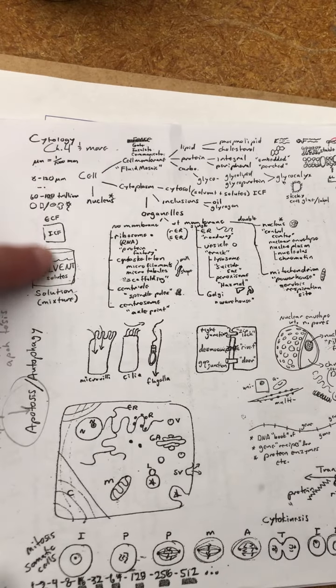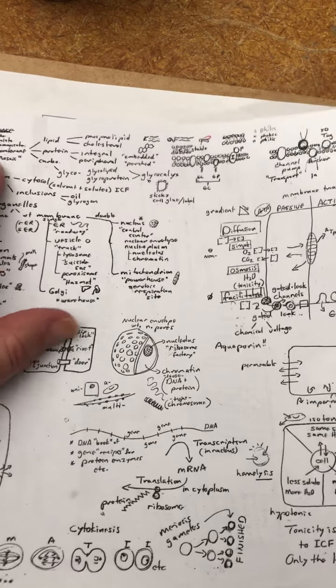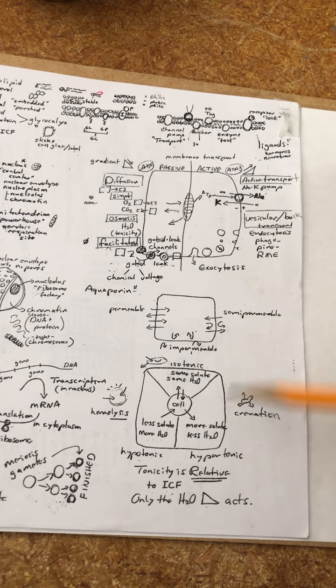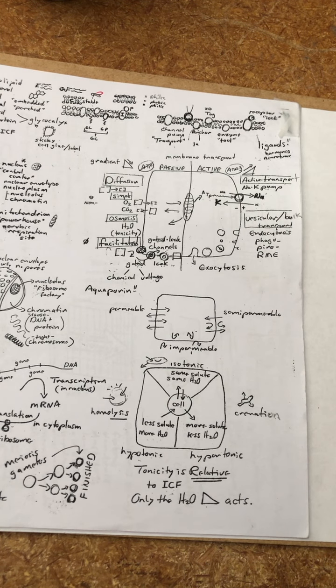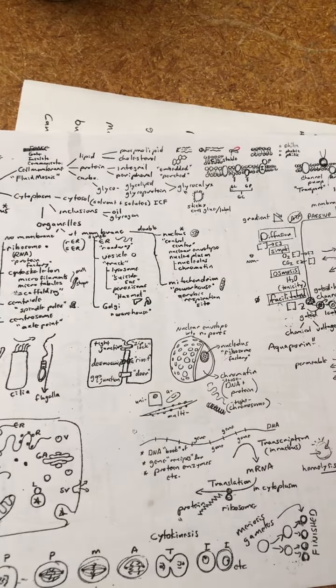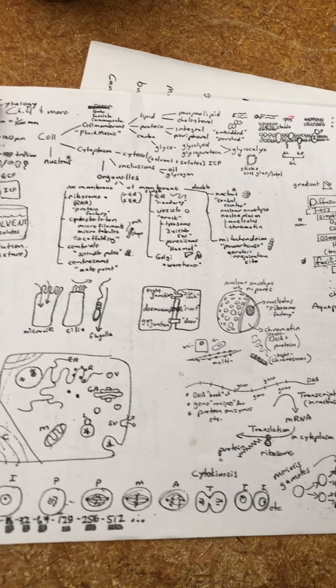Last time we were together, we had looked at the general features of the cell. We had looked at the general features of the cell membrane. We had talked about how you can move things across the cell membrane, throwing a lot of vocabulary words at you. Now we're looking at the cytoplasm.